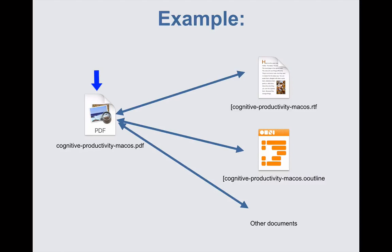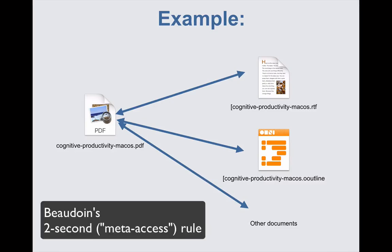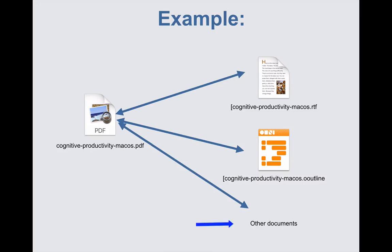This conceptual schematic shows that I have linked a PDF book on the left to a TextEdit RTF document, an OmniOutliner document, and other documents. Each note takes less than two seconds to create, file, link, tag, etc. You can link the source to as many other documents as you want.